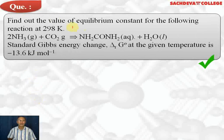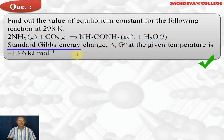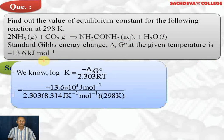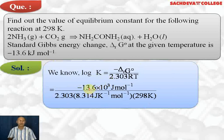Next question: find the value of equilibrium constant for the reaction — 2NH₃(g) + CO₂(g) → NH₂CONH₂ (urea, solution) + H₂O — where standard Gibbs energy change delta G° = minus 13.6 kilojoules per mole. Since delta G is given, we use the formula: log K = −delta G / (2.303 RT).